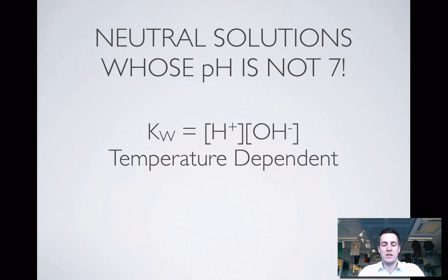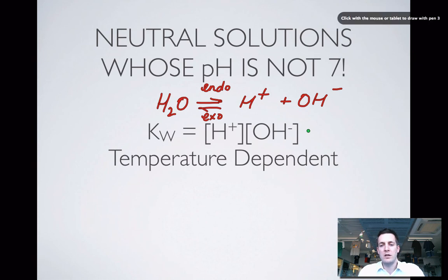Just going to look at why KW is temperature dependent. If you think about what this reaction involves: it's H2O turning into H plus ions and OH minus ions. What has to happen for that reaction to take place in the forward direction? We've got to break a bond. Breaking bonds is always endothermic, which means this reverse process is always going to be exothermic.